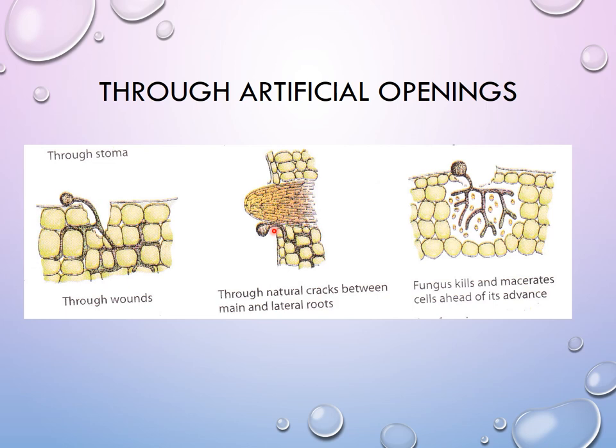Through artificial openings we also have lesions. Lesions are caused by a primary infection — some organism causes a primary infection, leading to a wound, and this helps secondary invaders to enter inside. Lesions are dead tissue formations caused due to primary infection, acting as an entry point for secondary invaders.